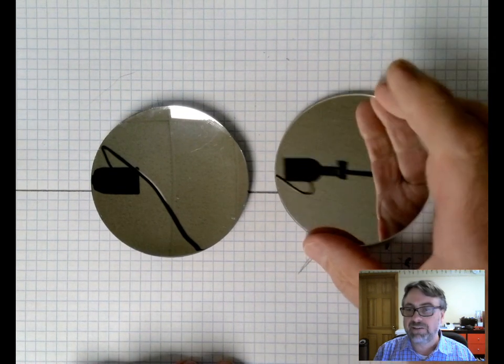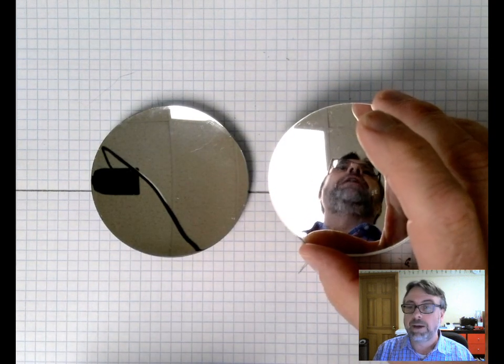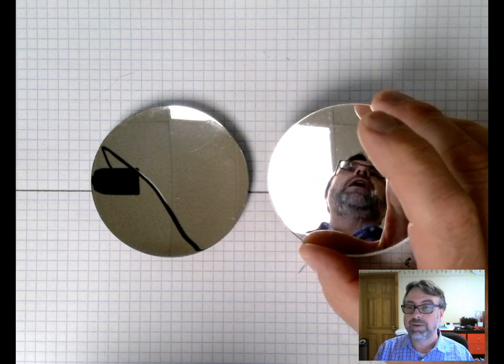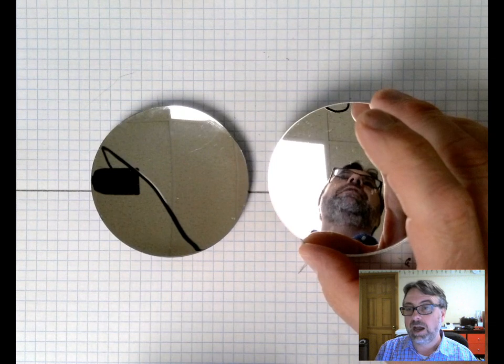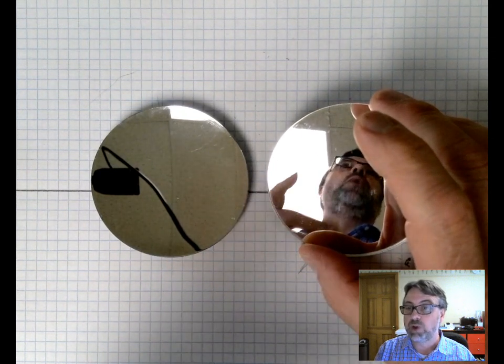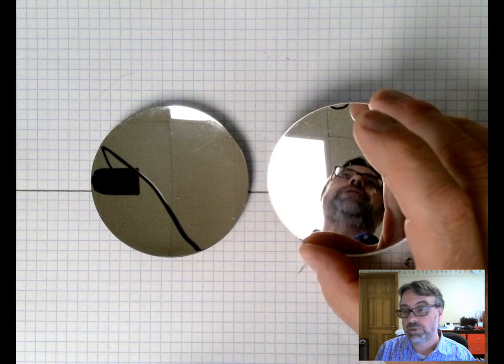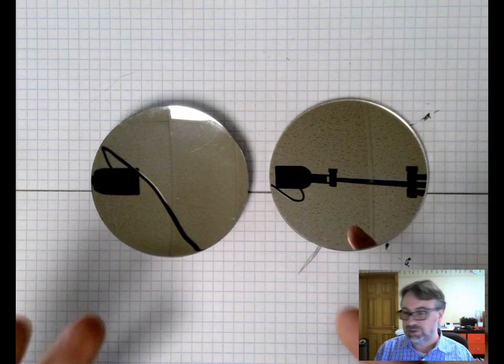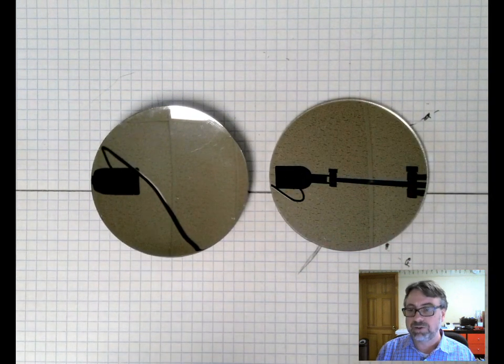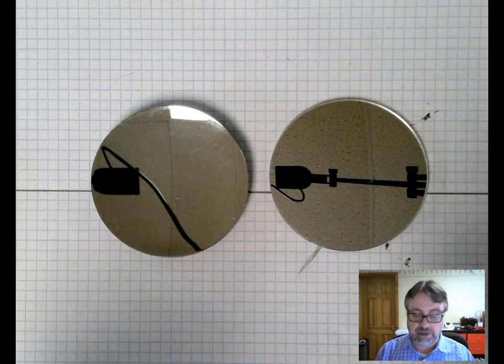For the convex mirror this image is not inverted but that's because it's also being formed behind the mirror. It's a virtual image. There would be no way to shine this image onto a piece of paper. Now it's a little too hard with these true spherical mirrors to demonstrate what's going on with light rays.